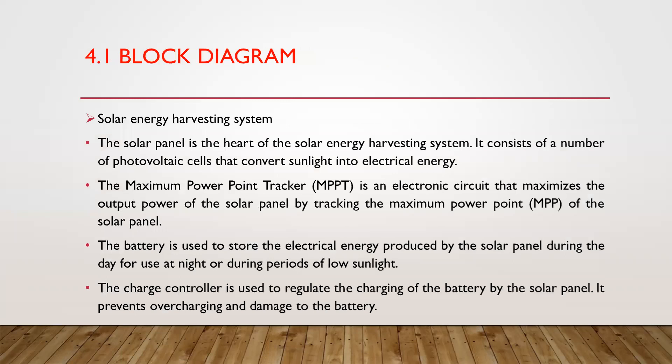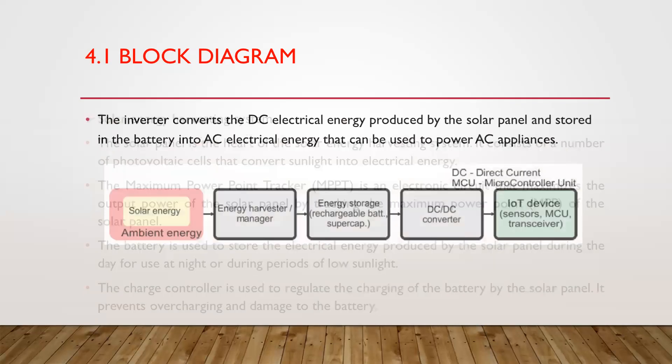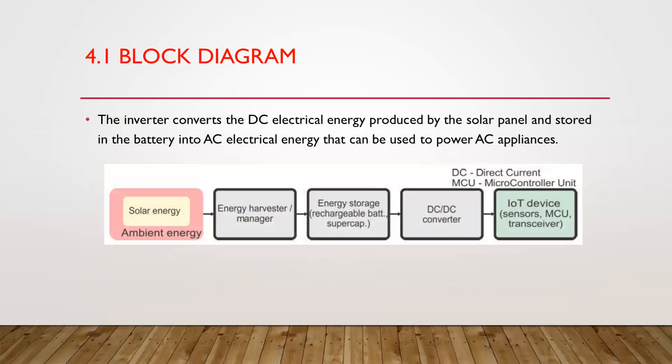In the solar energy harvesting system, the solar panel is the heart of the system and consists of photovoltaic cells that convert sunlight into electrical energy. A maximum power point tracker is an electronic circuit that maximizes the output power by tracking the maximum power point of the solar panel. A battery stores the electrical energy produced during the day for use at night or during periods of low sunlight. The charge controller regulates the battery's charge, preventing overcharging and damage. The inverter converts DC electrical energy from the solar panel and battery into AC electrical energy to power AC appliances.